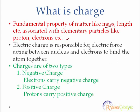Charges are of two kinds: negative charges and positive charges. Electrons are negatively charged particles, and protons, of which the nucleus is made up, are positively charged particles. Actually, the nucleus is made up of protons and neutrons, but neutrons are uncharged particles.